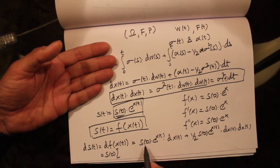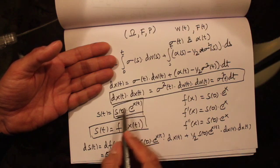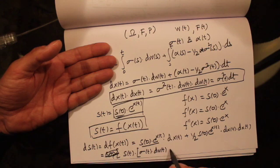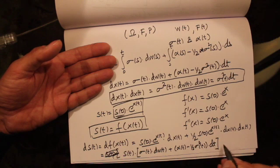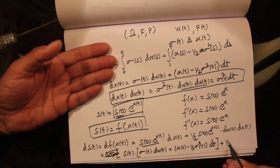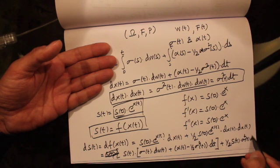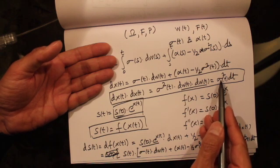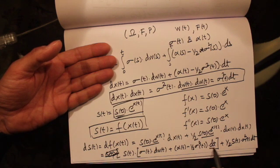Since S₀ · e^{X(t)} is nothing but S(t), we can substitute S(t) everywhere. Expanding dX(t) = sigma(t) dW(t) + [alpha(t) − one-half sigma squared(t)] dt, we now combine terms. We can write the result and gather the dt terms together.